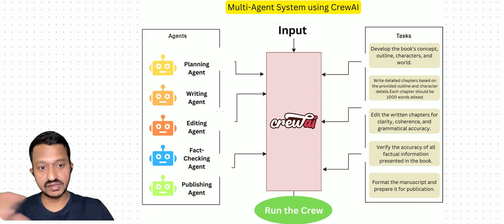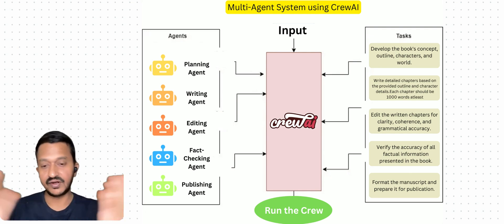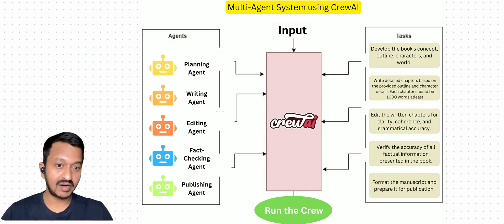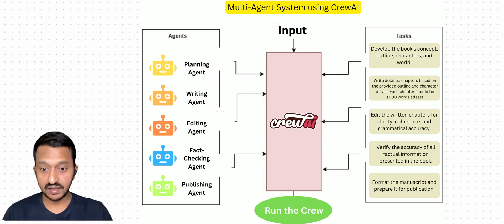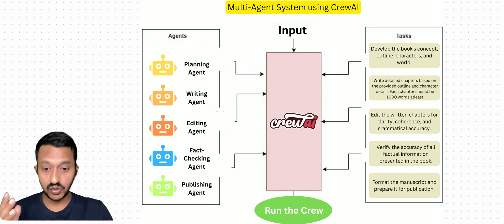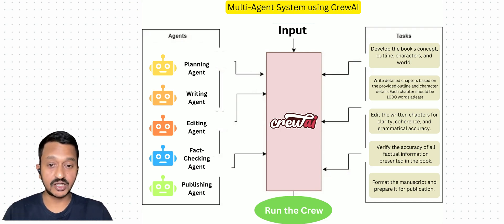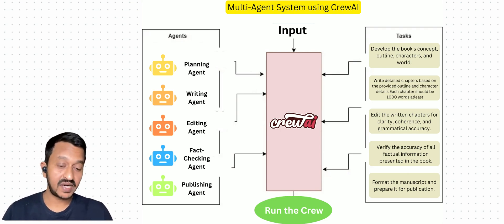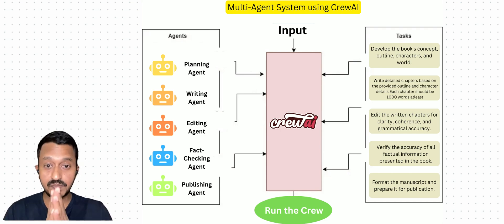We have also assigned specific tasks to each agent. The planning agent will develop the book's concept, outline, characters, and world. The writing agent will write detailed chapters based on the provided outline. The editing agent will edit the written chapters for clarity, coherence, and grammatical accuracy. The fact-checking agent verifies the accuracy of all factual information presented in the book. Finally, the publishing agent formats the manuscript and prepares it for publication.